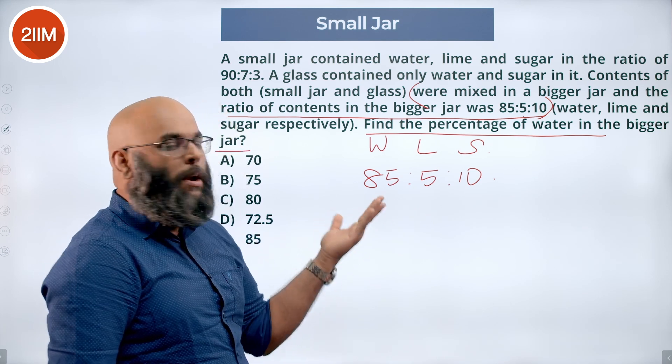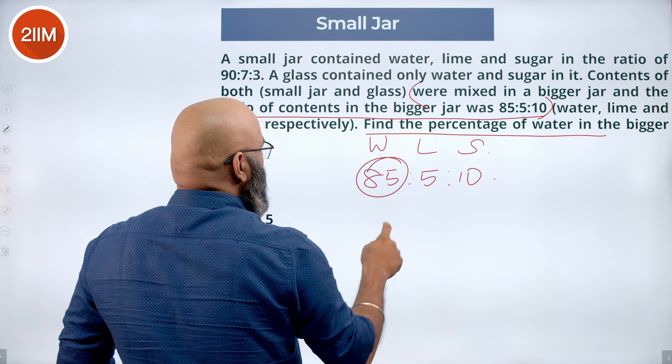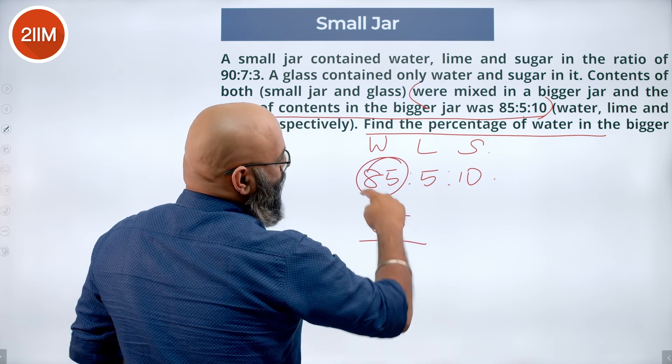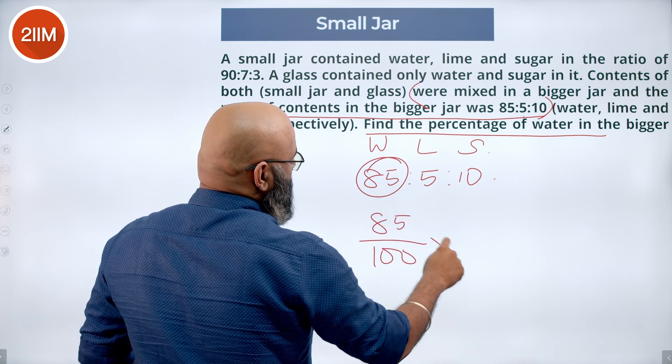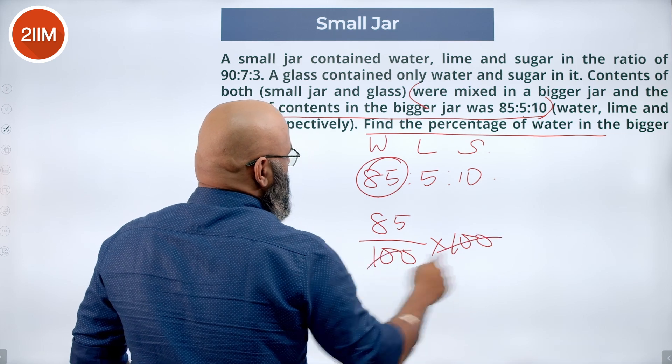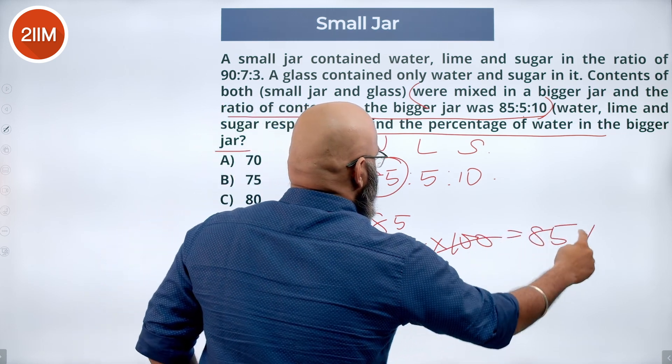So if I have to find the percentage, I will clearly say water is 85 parts out of a total of 100 parts. So the percentage is 85 percent.